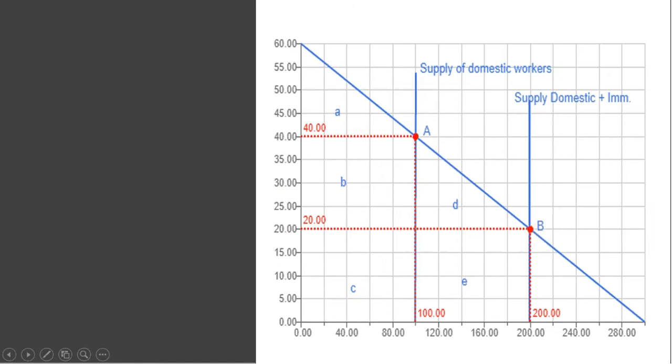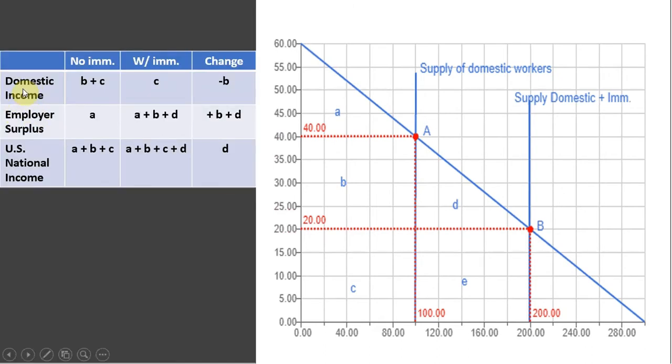The final step is to talk about this concept called immigration surplus. So here we have domestic income. We're going to calculate that with and without immigration. We're going to look at employer surplus or producer surplus in the labor market with and without immigration. And then the final thing here is U.S. national income, which is just going to be the sum of domestic worker income and the employer's income or employer surplus.